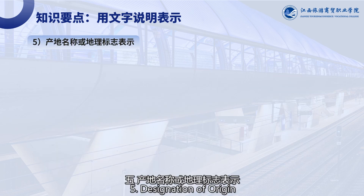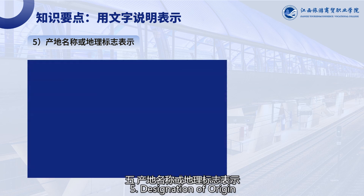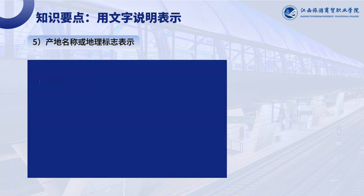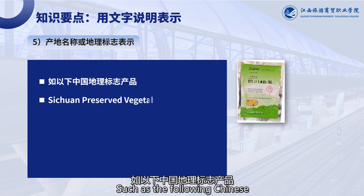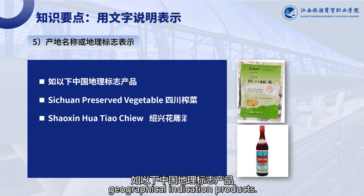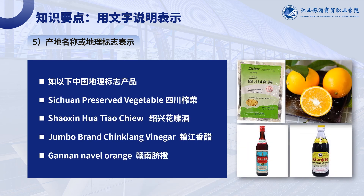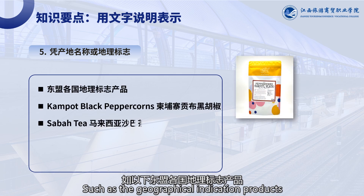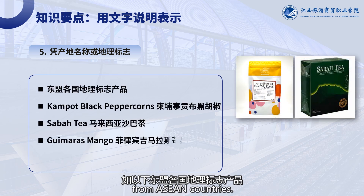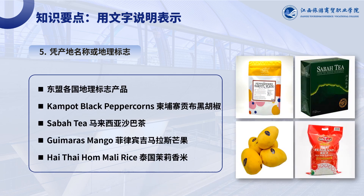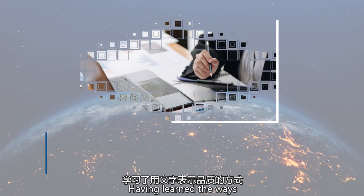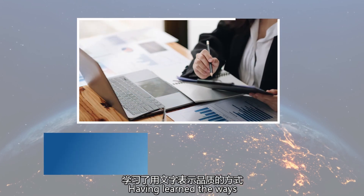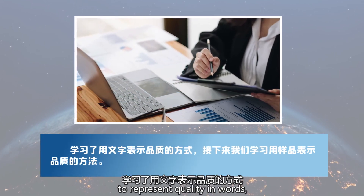Method 5: Designation of origin or geographical indication. Examples include Chinese geographical indication products and geographical indication products from ASEAN countries. Having learned the ways to represent quality in words, next we will learn methods to represent quality with samples.